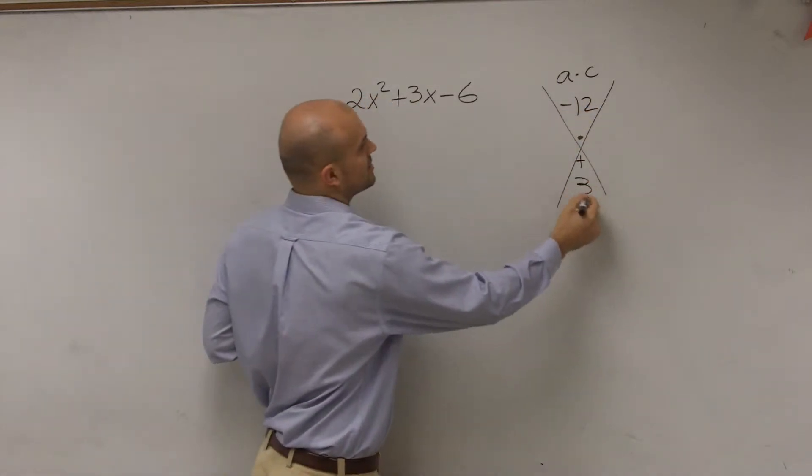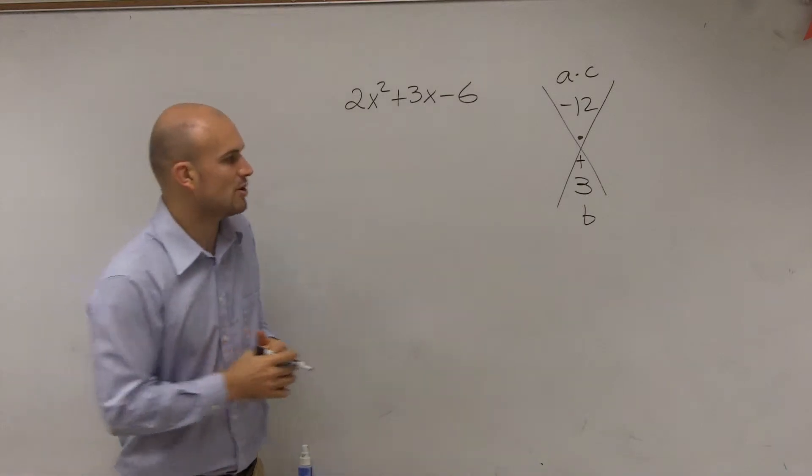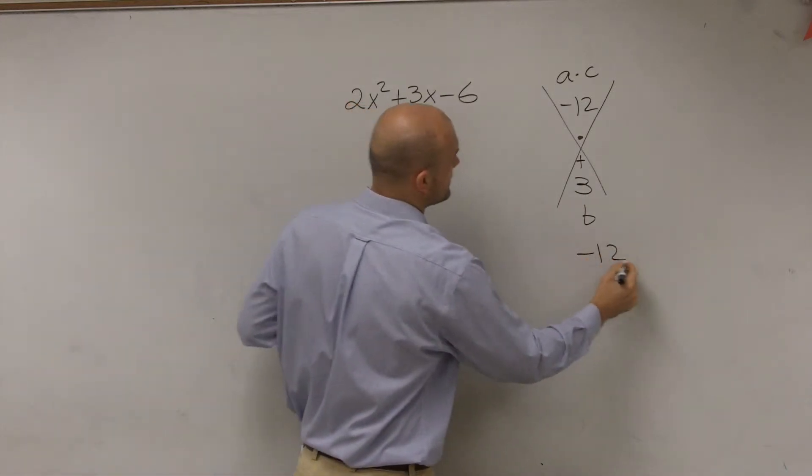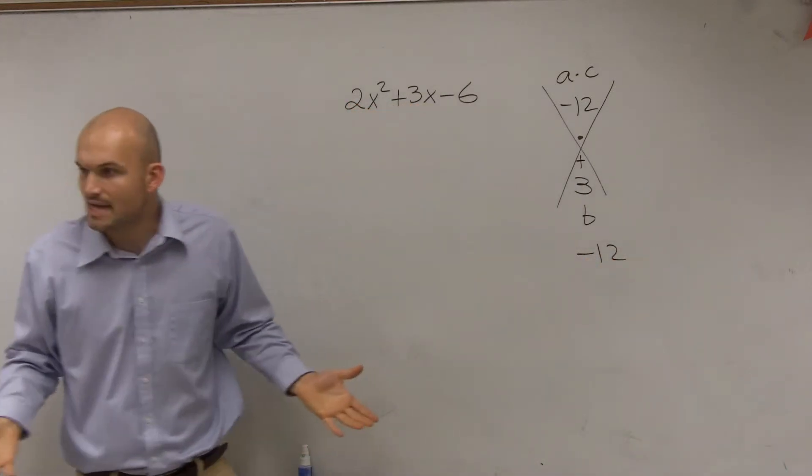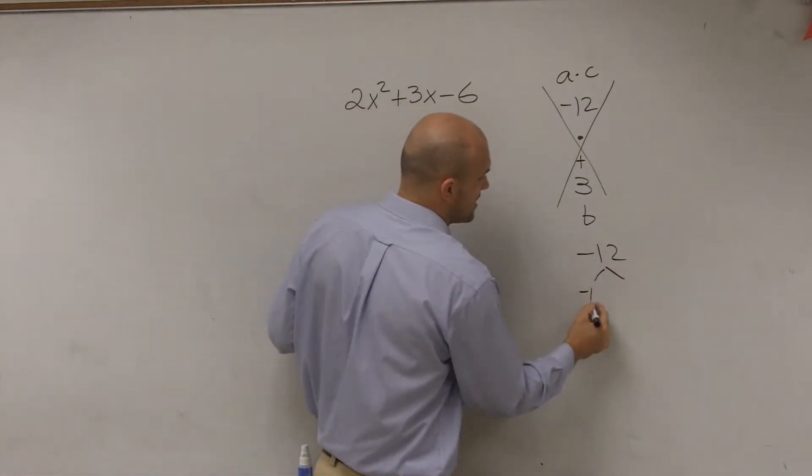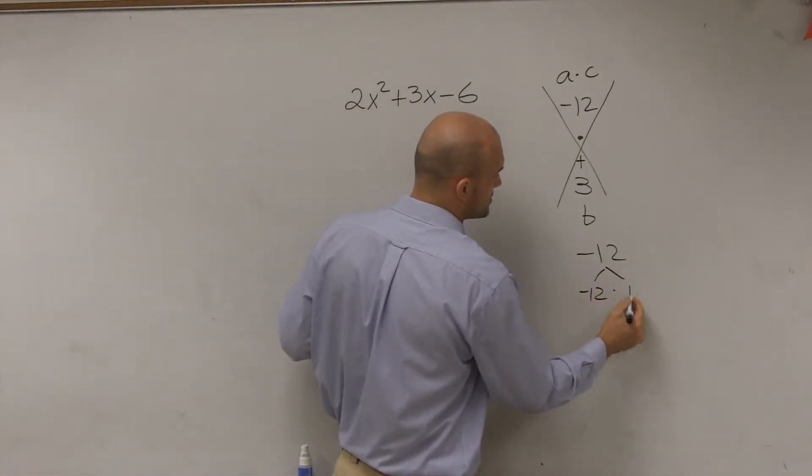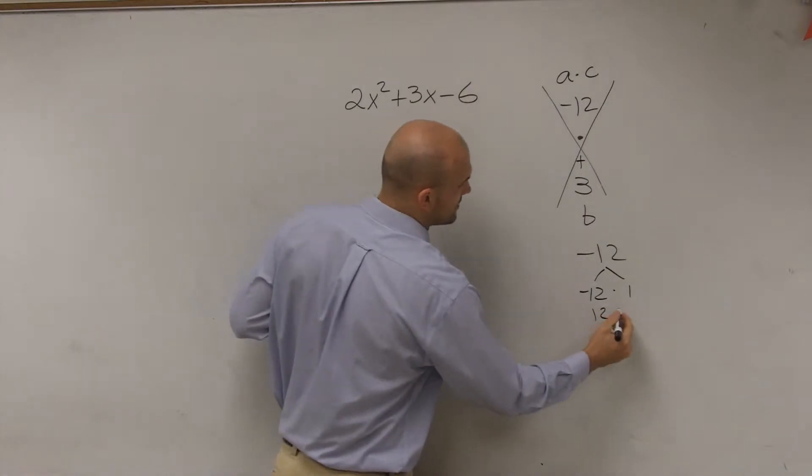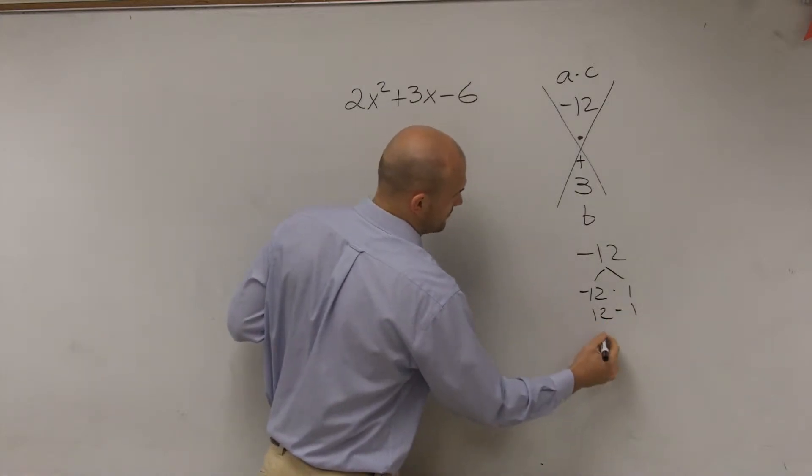3 is going to add. So what you guys need to do is think about all the factors that multiply to give you negative 12. And if you guys are getting stuck with this, just write them down, right? A lot of you guys I see struggle with this, but I don't see you write down the numbers that multiply to give you negative 12. 3 times negative 4.